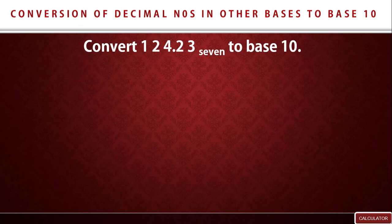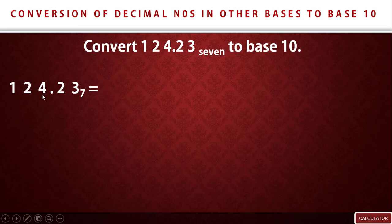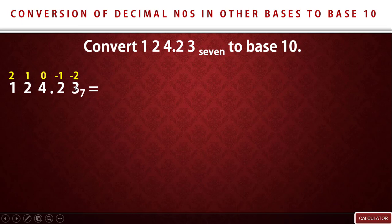Now for example 2. We are asked to convert 124.23 in base 7 to base 10. Write down your number: 124.23 in base 7. The 124 is the whole number side and 23 is the decimal fraction side. For the whole number part 124, the last digit is 4, so powers start at zero from there: 0, 1, 2. For the decimal fraction, after the decimal point the first digit is minus one and the second digit is minus two.